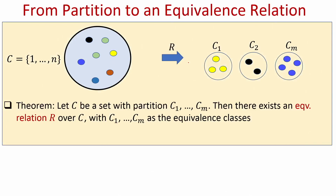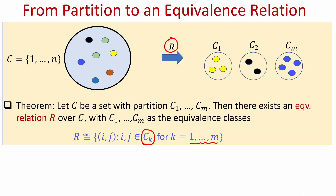Now I can prove the property in the reverse direction as well. My claim is that you give me any partition of a set C — say a collection of M subsets which constitute a partition of C — then I can give you an equivalence relation R whose equivalence classes will be exactly those subsets given in the partition. I will give you the construction of the equivalence relation, and it is very straightforward.